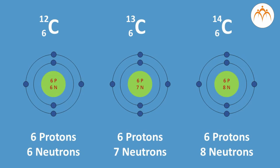We use a method called carbon dating for determining the age of fossils. For this, we use an isotope of carbon, C-14. In nature, we find carbon as 6C12, 6C13, and 6C14. All these are isotopes of carbon.